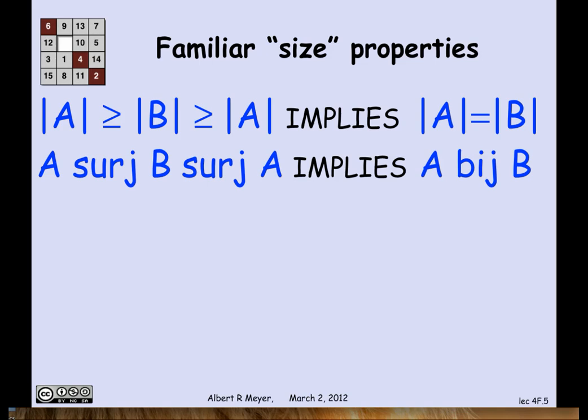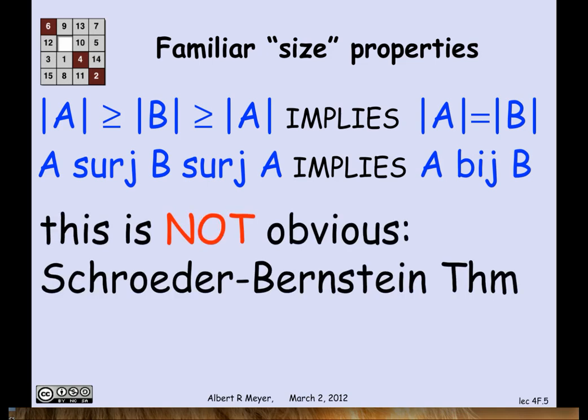The corresponding statement would be that if there's a surjection from A to B, which we want to think of as meaning that A is at least as big as B, and there's also a surjection from B to A, then that implies that A bij B. Well, it's true, but this one's not obvious. This is known as the Schroeder-Bernstein theorem.